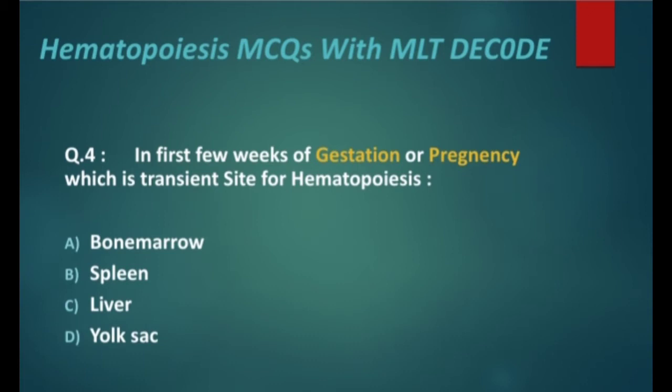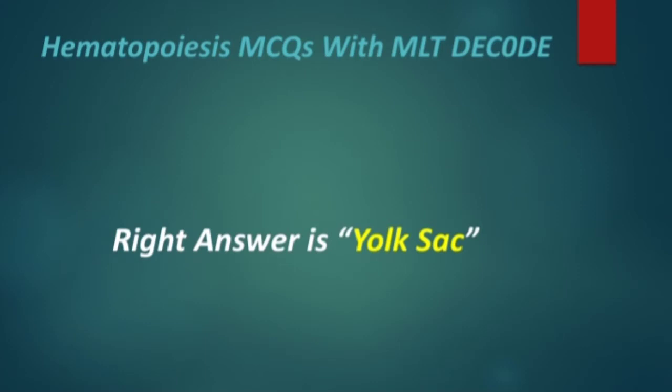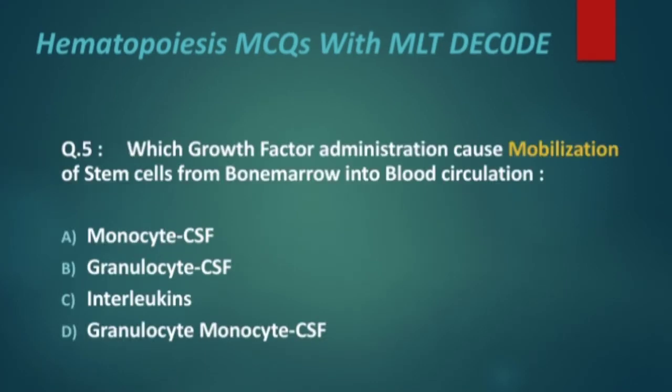Next MCQ: in the first few weeks of gestation or pregnancy, which is the transient site for hematopoiesis — bone marrow, spleen, liver, or yolk sac? The right answer is yolk sac.